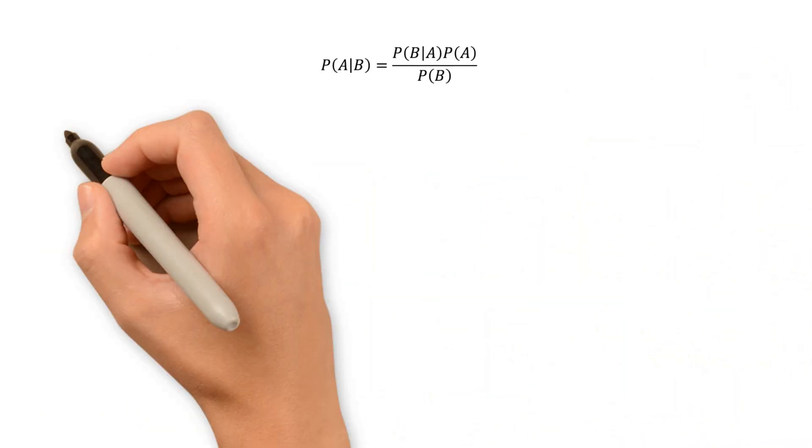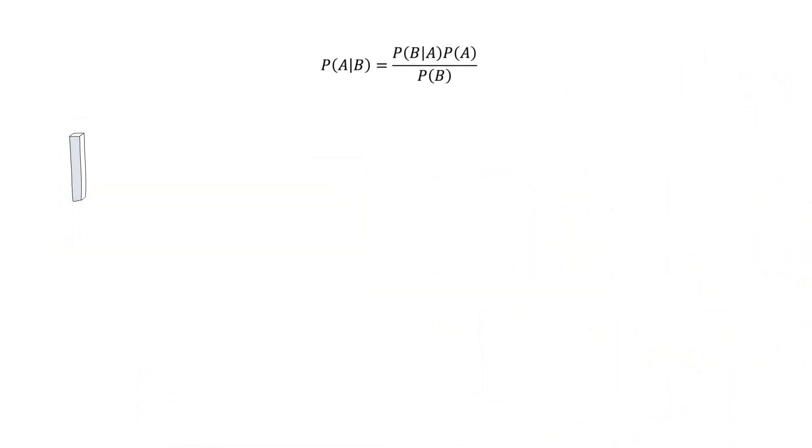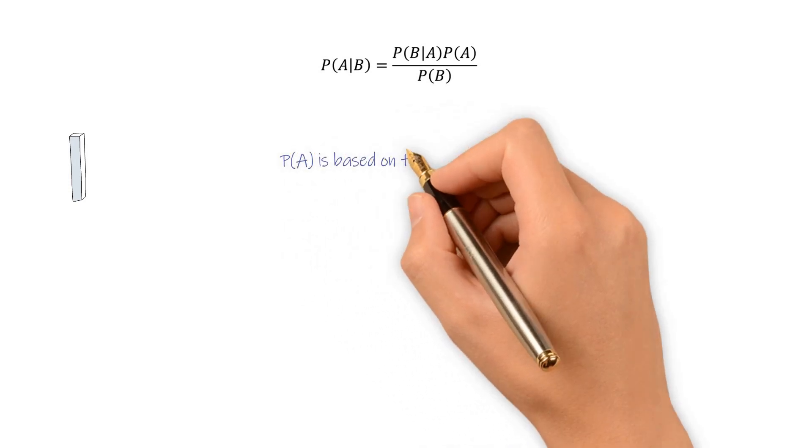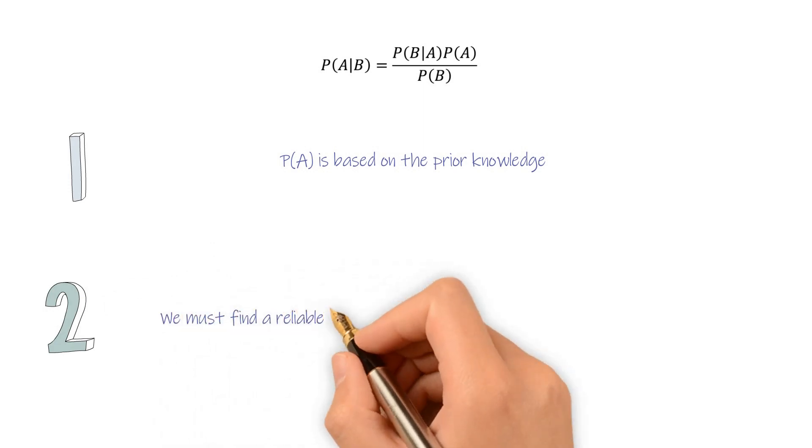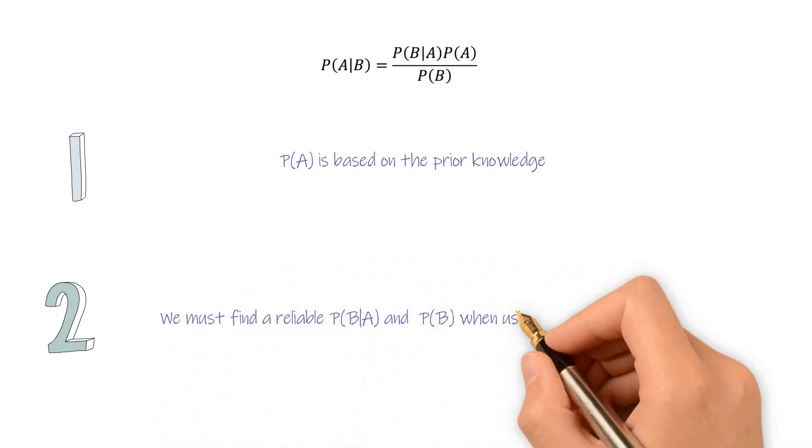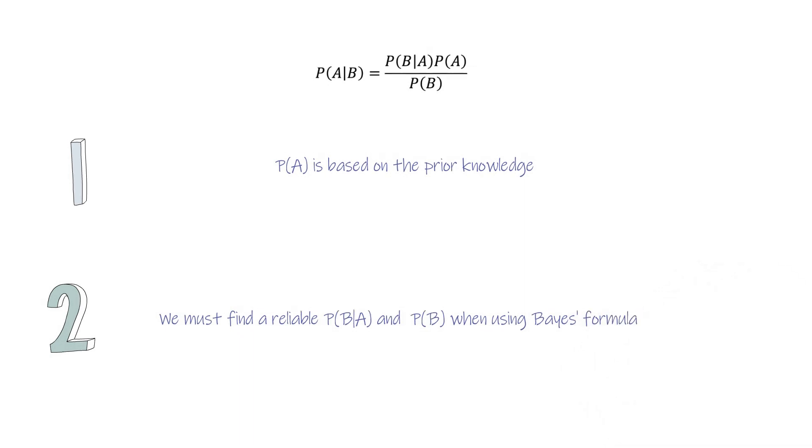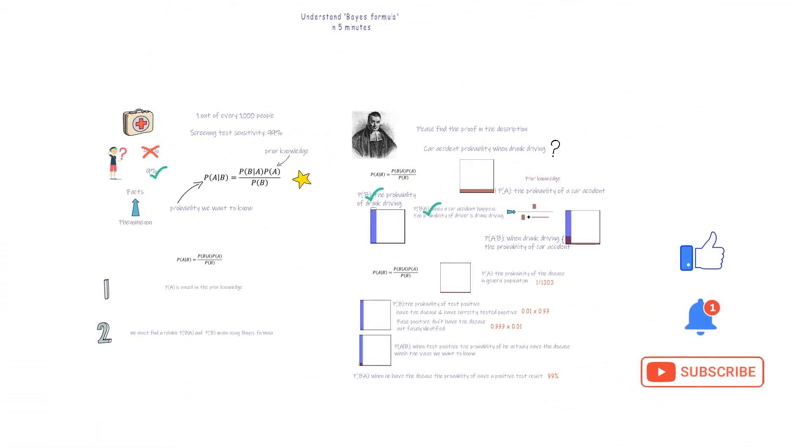Two takeaways. First, P(A) is based on prior knowledge. Second, we must find a reliable P(B|A) and P(B) when using Bayes formula. I'm always here at your service. See you in the next one.